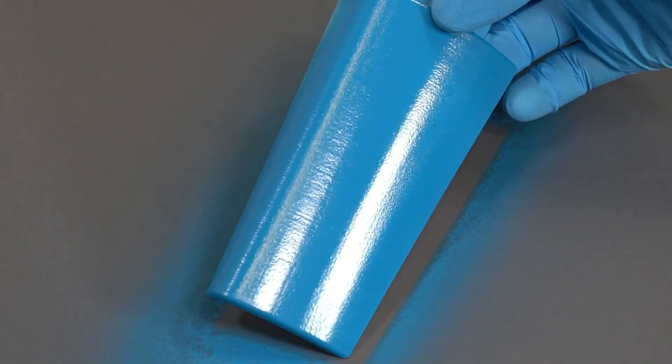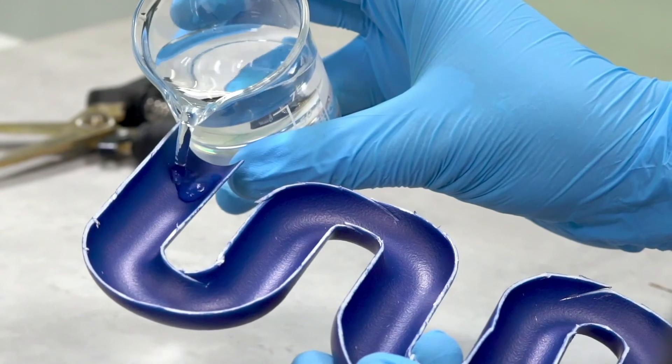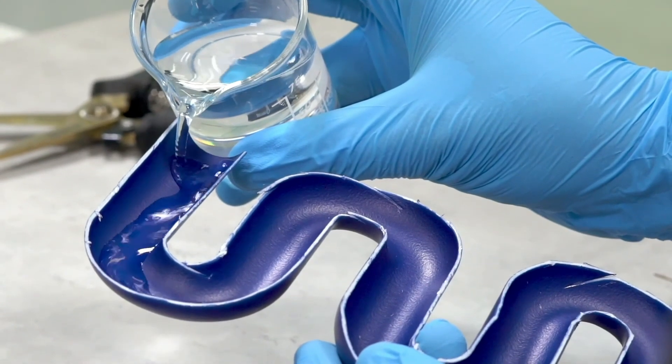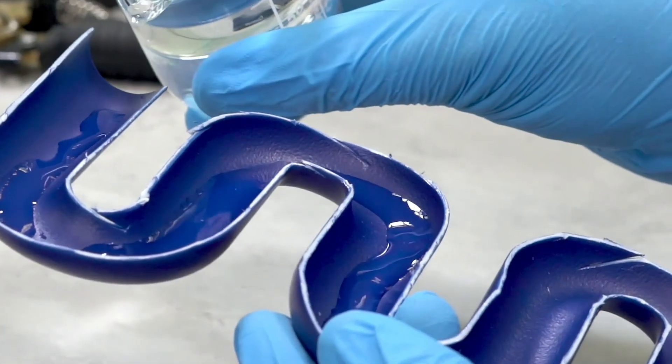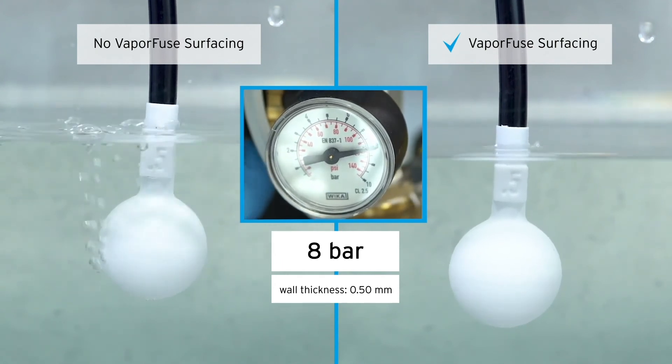Vapor fuse surfacing delivers sealed and washable parts with injection molded like surfaces. VFS works for all common plastics and particularly for flexible materials such as TPU for which mechanical techniques are not suitable.